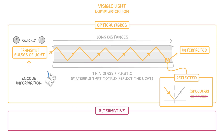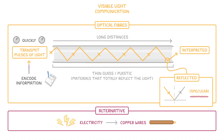The alternative to using optical fibers to transmit our information is using copper wires and electricity. But the advantage of optical fibers is that they can transmit much more information and the signals are less likely to be distorted during transmission.